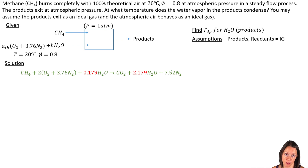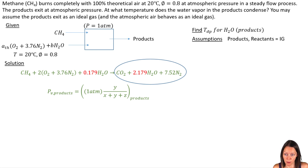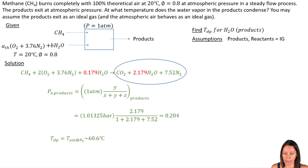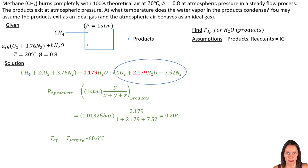That was a lot of work just to get the balanced equation, but now I can find the dew point temperature. Using Dalton's model and the ideal gas law, I multiply the overall pressure — 1 atm expressed as 1.01325 bar — by the mole fraction of water vapor in the products. Doing the math, I get a partial pressure of about 0.204 bar. Looking in the saturated water tables, the saturation temperature at 0.204 bar is approximately 60.6 degrees Celsius.